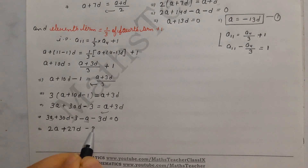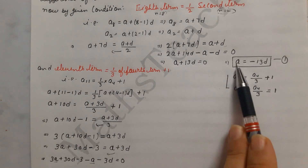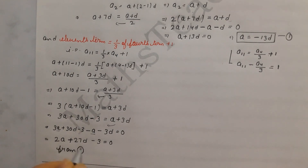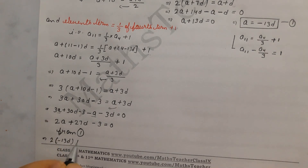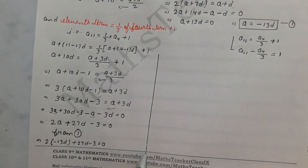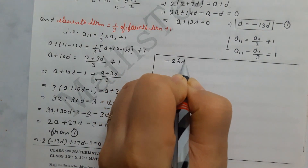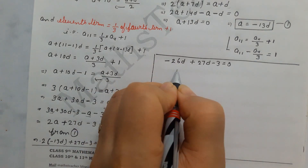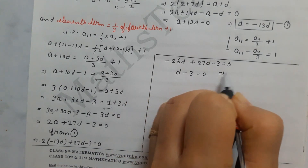Now we substitute the first equation a = −13d into the second equation 2a + 27d − 3 = 0. This gives: 2(−13d) + 27d − 3 = 0, so −26d + 27d − 3 = 0, which gives d − 3 = 0. Since 27 is bigger, the sign is positive, so d = 3.